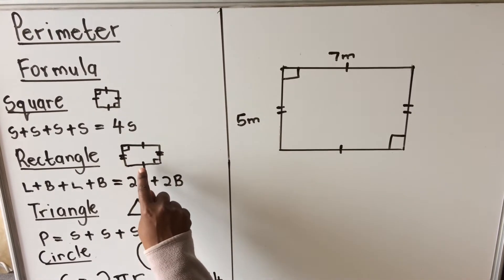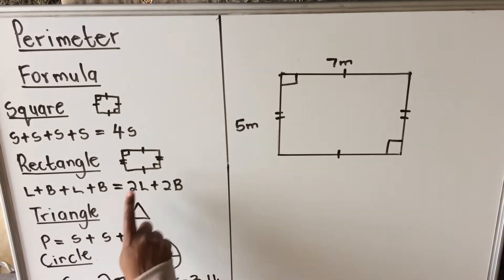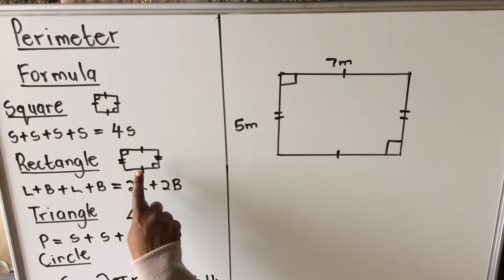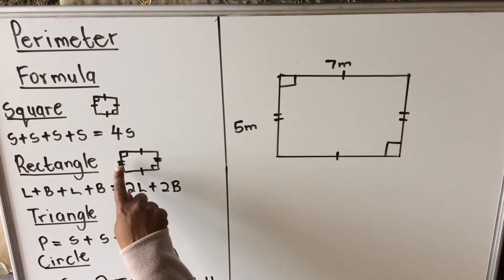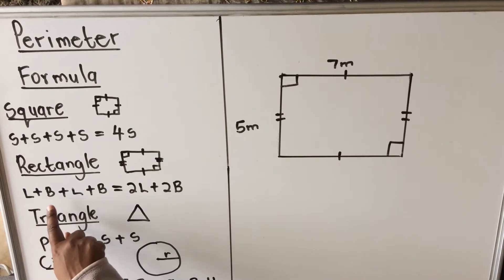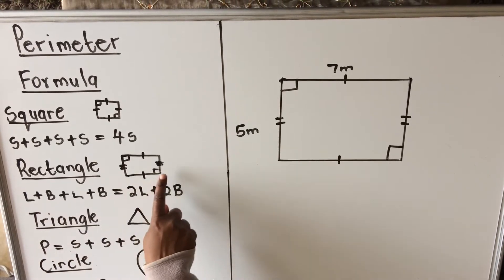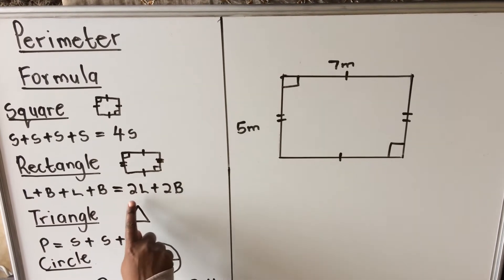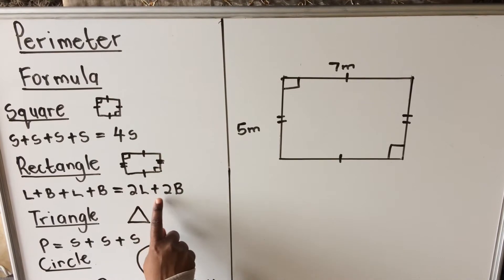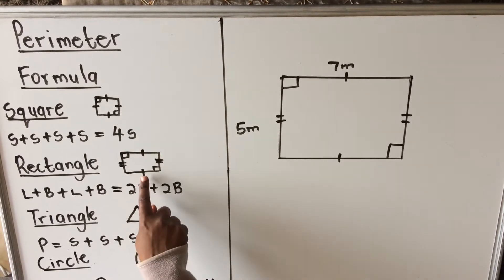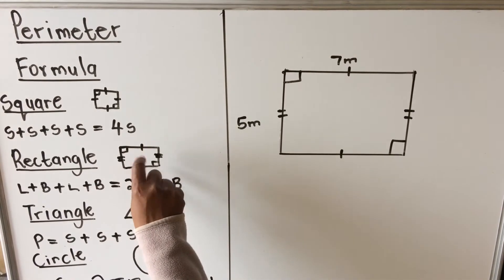A rectangle is a four-sided shape where two opposite sides are equal. The tick marks show this side equals that side, and this one equals that one. When you calculate the perimeter, you add length plus breadth plus length plus breadth, so the formula is two times length plus two times breadth.